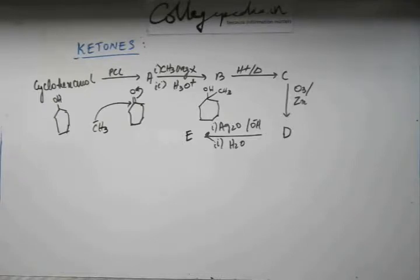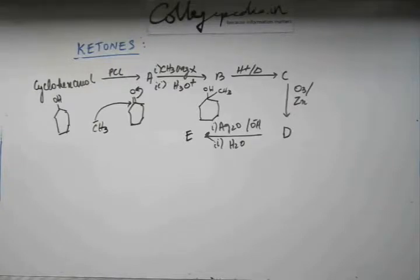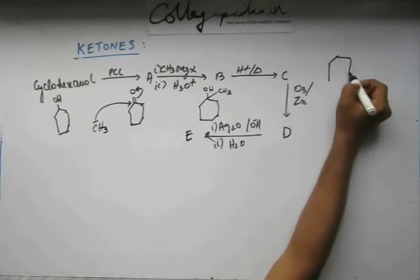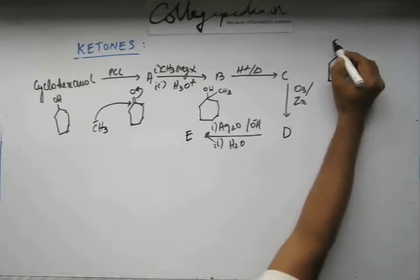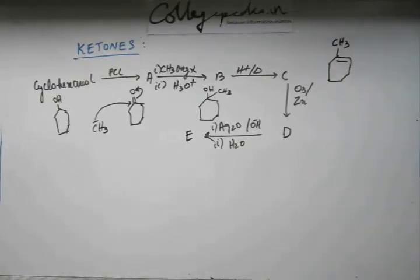The product of dehydration reaction is alkene. Now the dehydration reaction we have learnt, lot many examples we have practiced to write the product of a dehydration reaction. So it won't be difficult for you to identify C. C would be this alkene. Right?